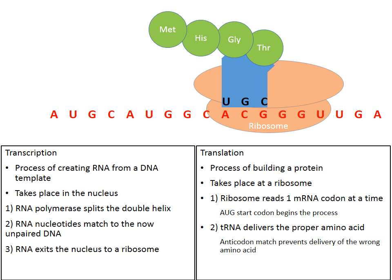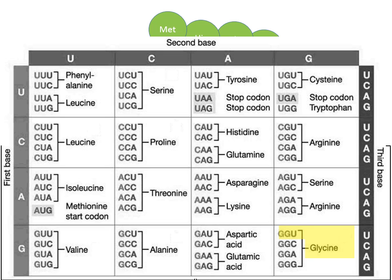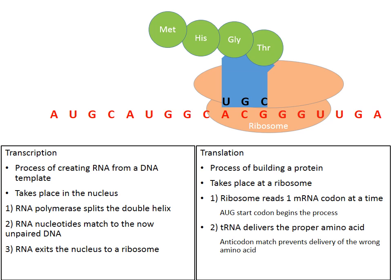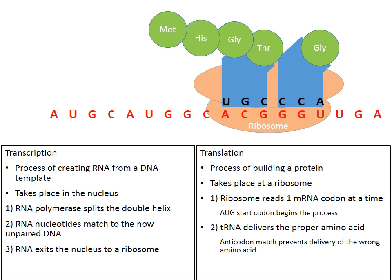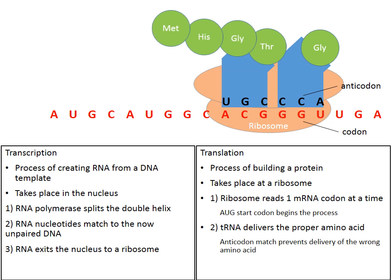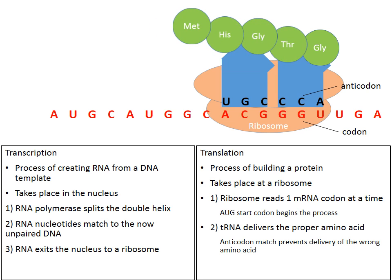The ribosome moves down a notch. The codon GGU is now exposed. Transfer RNA will deliver the proper amino acid. We find GGU on the chart — that's the amino acid glycine. Transfer RNA brings over GLY, which stands for glycine. Because the codon and anticodon are opposite matches, that allows the chain of amino acids to be bonded together, and the tRNA on the left detaches.